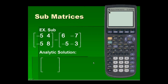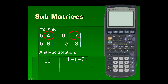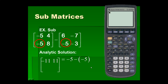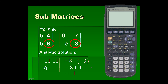Next, we'll subtract the same two matrices. Once again, we'll subtract the corresponding elements. First, we subtract the elements in the first row, first column for a difference of negative eleven. Then the first row, second column for a result of positive eleven. We do the same for the second row, first column for a result of zero. And lastly the elements in the second row, second column. And we have our resulting matrix.